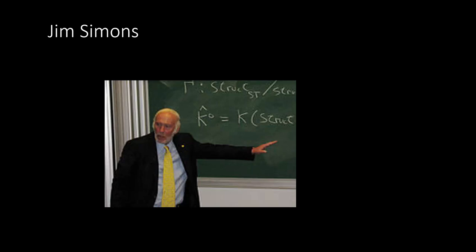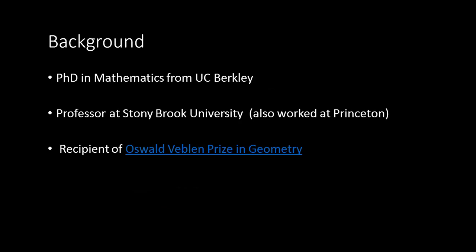His background is in mathematics. He did his PhD in mathematics from UC Berkeley and his undergrad from MIT. After that, he worked briefly in Princeton University as a code breaker during the Vietnam War. But he lost his job because he voiced his opinion against the Vietnam War. That didn't go well with his manager and he was fired. Then he found a position as a professor at Stony Brook University.